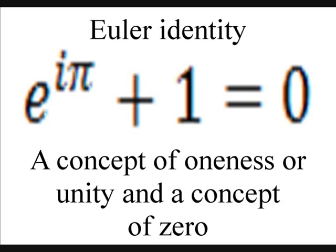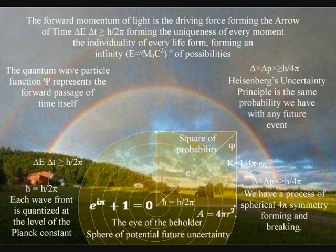Euler's identity is one of the most beautiful equations to come out of the mind of man. It gives us a concept of oneness or unity, and a concept of zero. This video is going to explain how this equation is woven into the fabric of space and time.